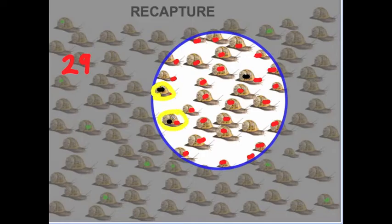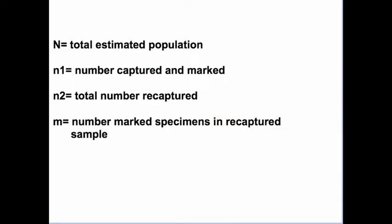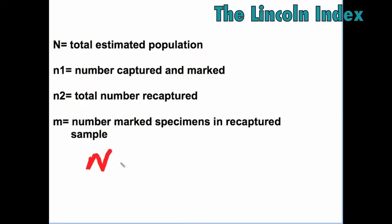These two numbers are very important in the model for estimating the number of snails in our garden. 29 and 3, and then we bring out our formula where N is the total estimated population and N1 is the number captured and marked.